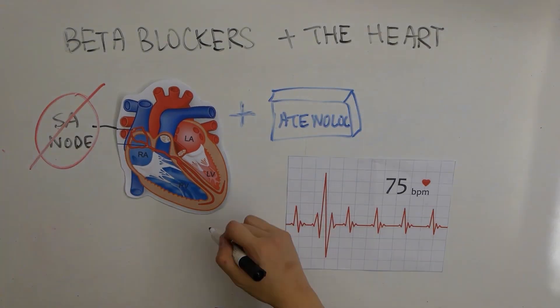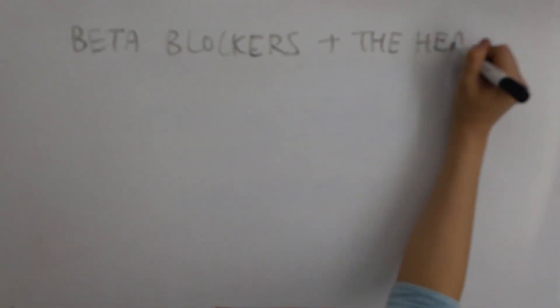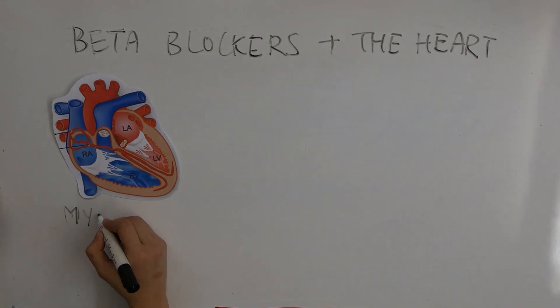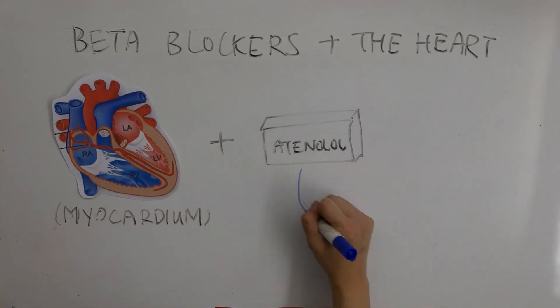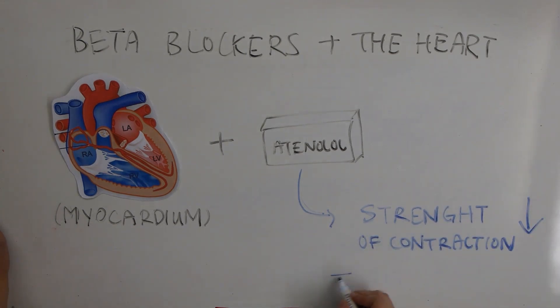in the heart is reduced, thus resulting in a slower heart rate. The inhibitory nature of beta blockers in the myocardium also reduces the strength at which the heart contracts, reducing the cardiac output.